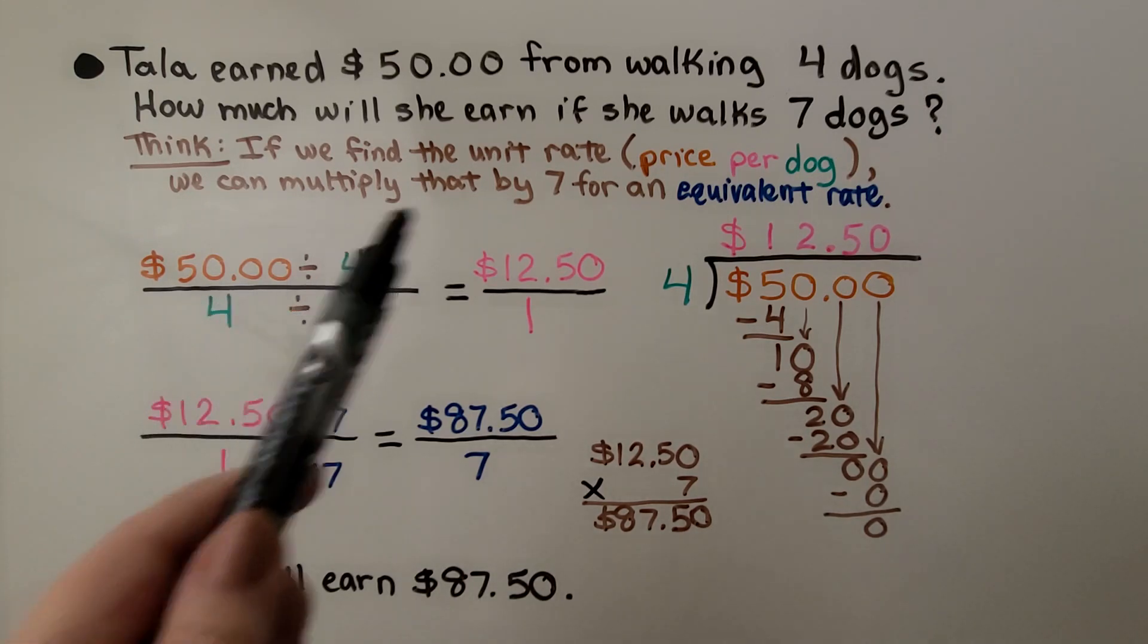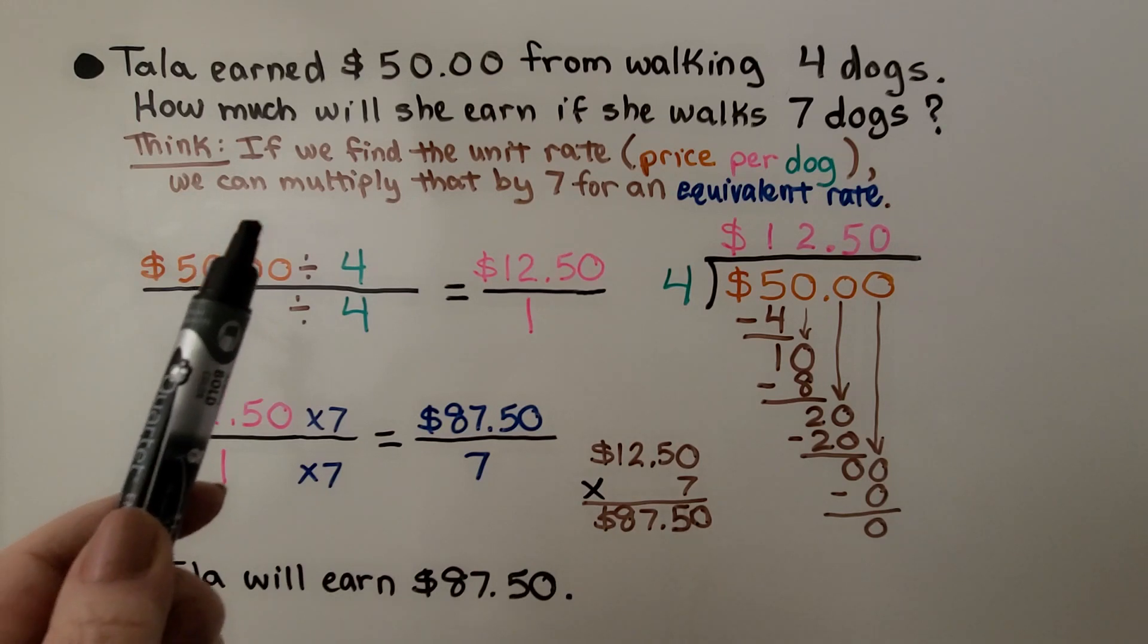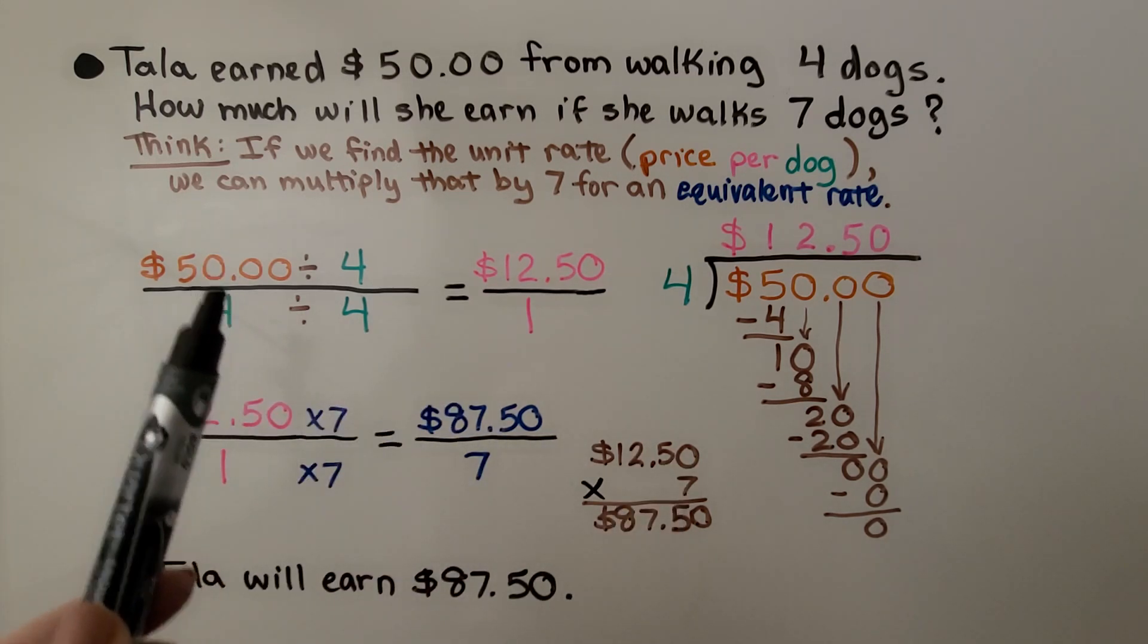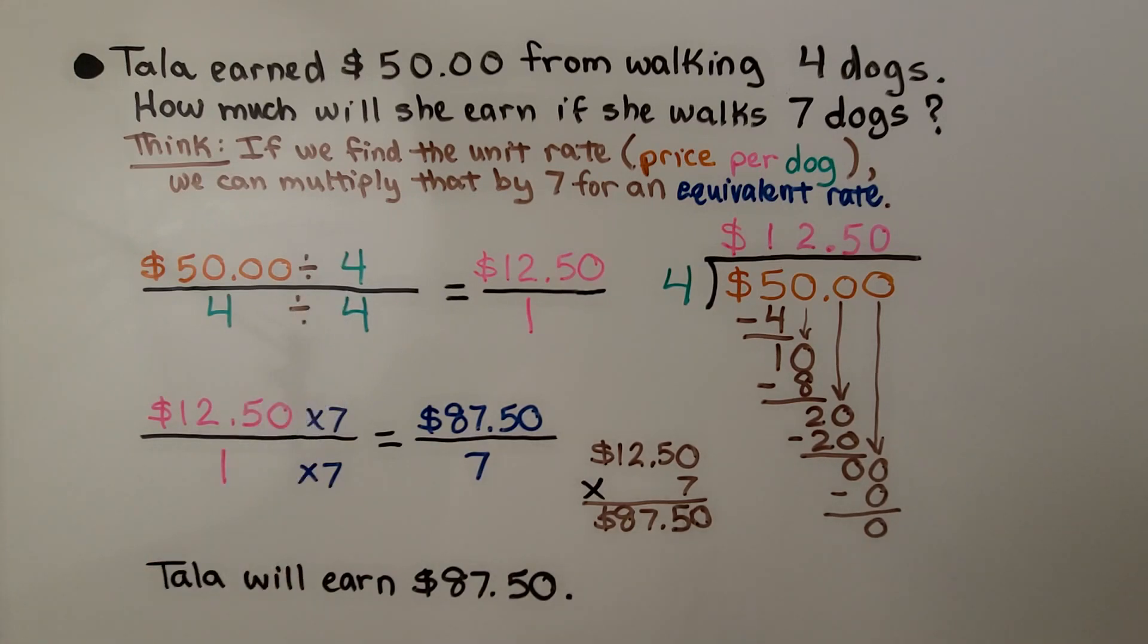We had to take the information of price per dog and multiply it by seven to find the answer. And we found the price per dog by doing division here, dividing by the same number.